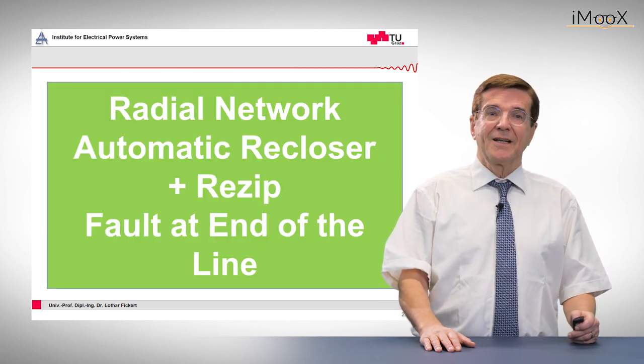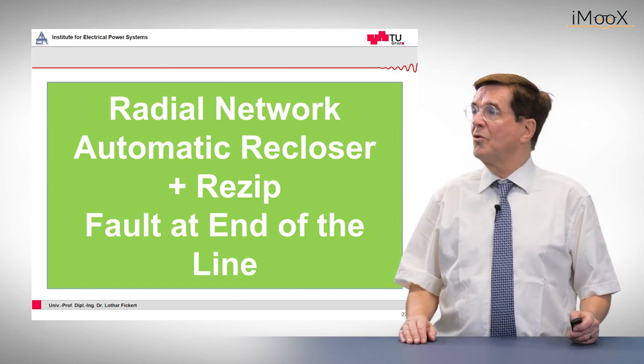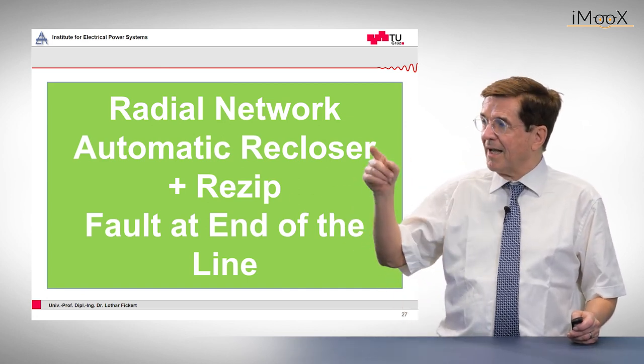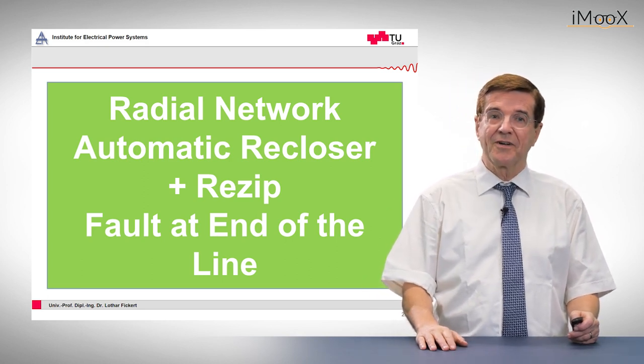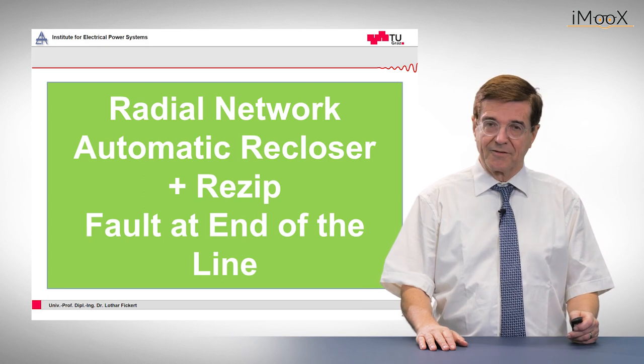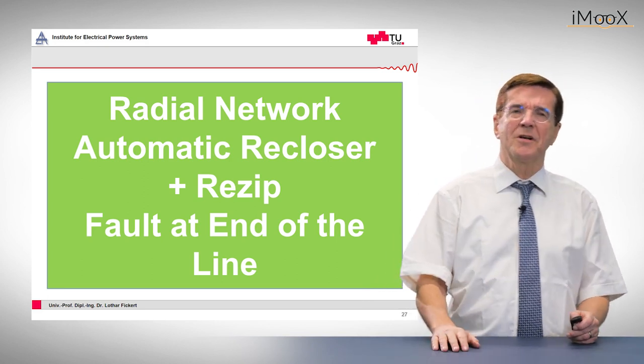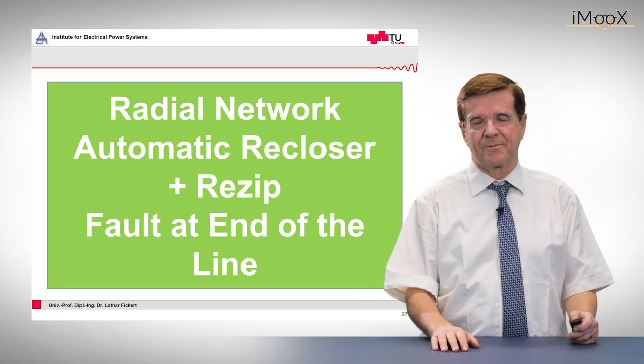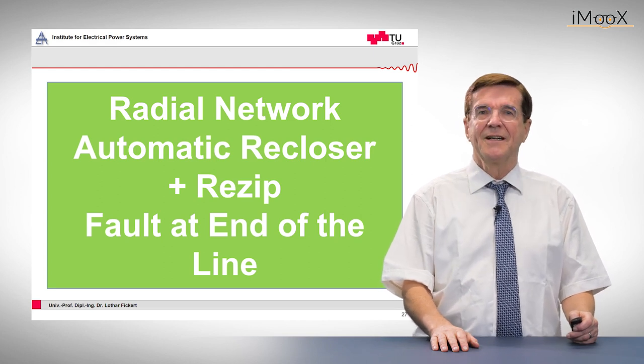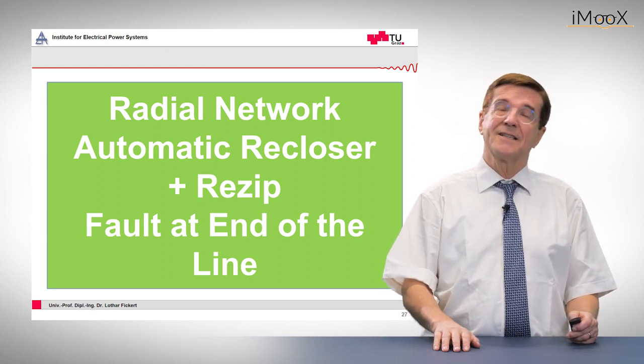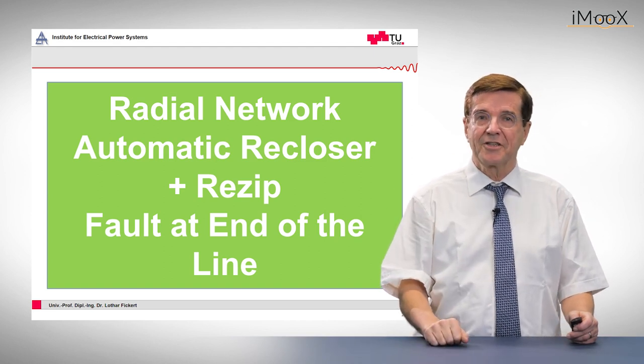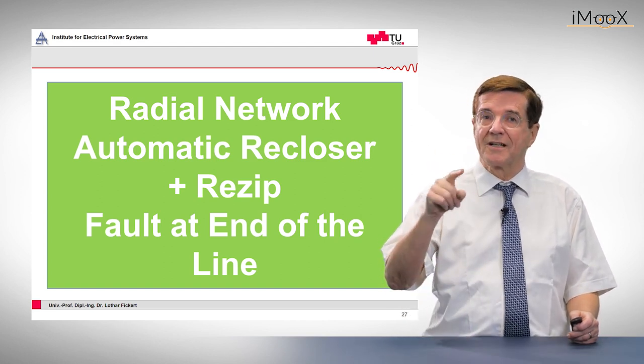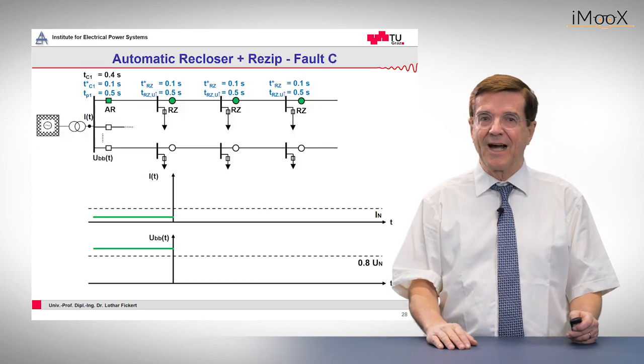Now let's look at a radial network with an automatic recloser and a re-zip recloser. This is a new type of protection device and a fault at the end of the line. Let me give you a few words about this principle of the re-zip recloser. A re-zip recloser is a device that is not only capable of time graded protection but also of logically graded protection. And we see how it works.